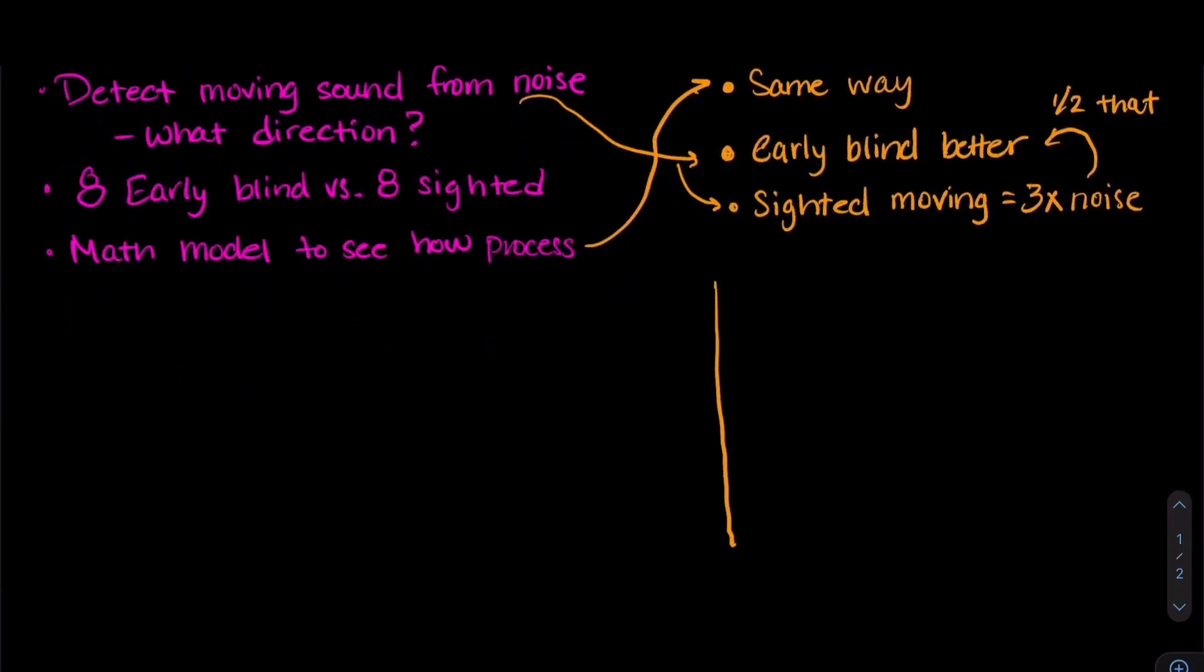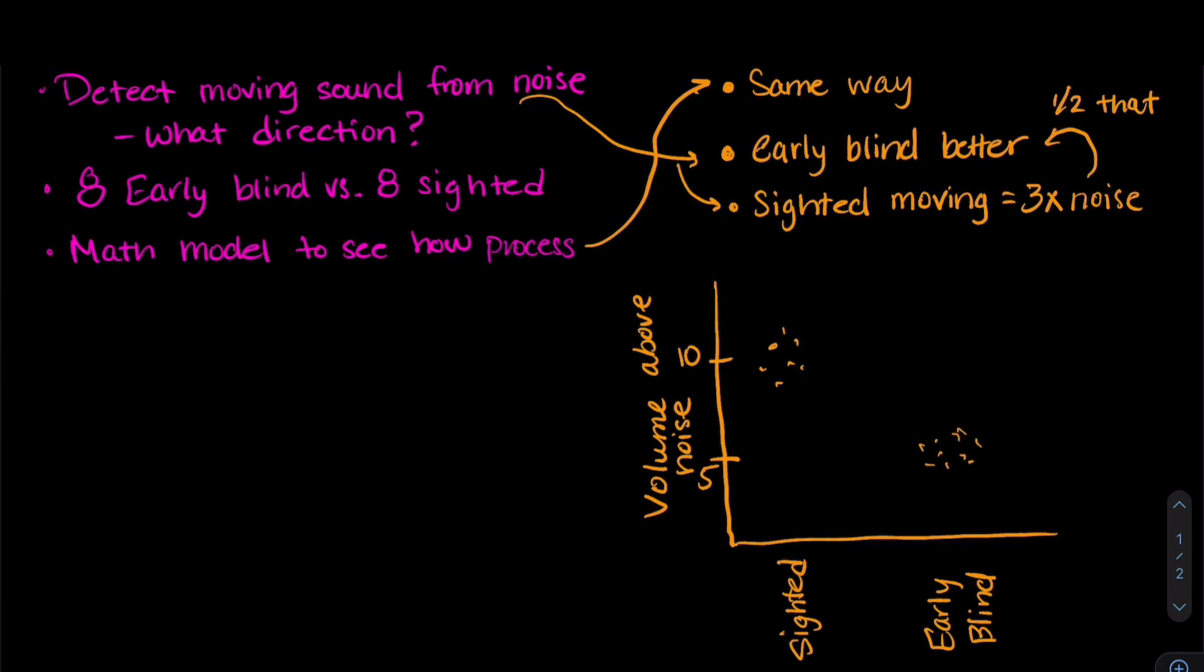So if we look at a graph of this, here on the x-axis we have our sighted participants and then our early blind participants. And on the y-axis we have the volume above the noise that the moving sound was. And that's in decibels. So we've got five and ten. And most of the sighted participants were up around ten. Most of the early blind participants were around five decibels.